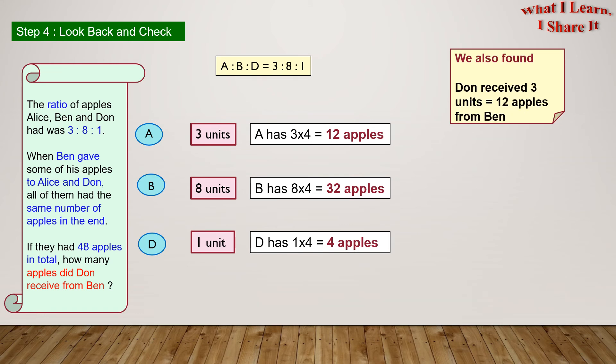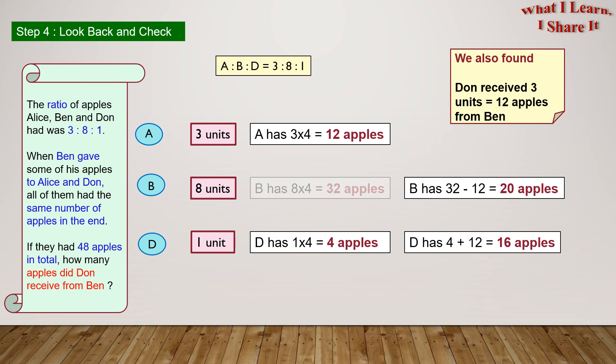We also found Don received 3 units or 12 apples from Ben. So Ben will lose 12 apples and Don will gain the 12 apples. This means B has 32 minus 12 equals to 20 apples, and D has 4 plus 12 equals to 16 apples.